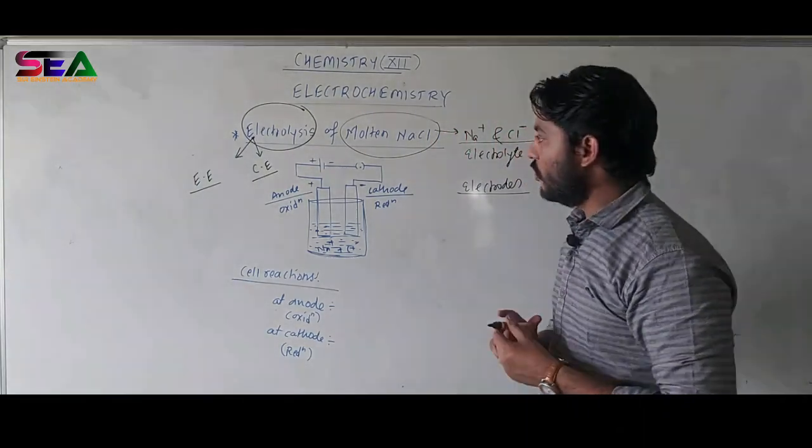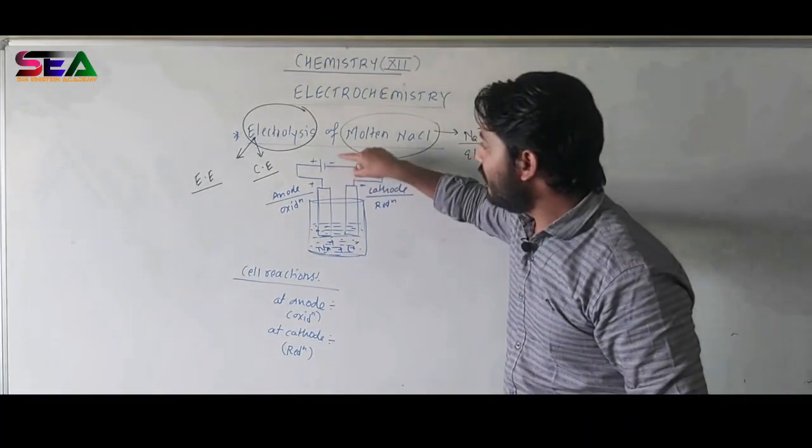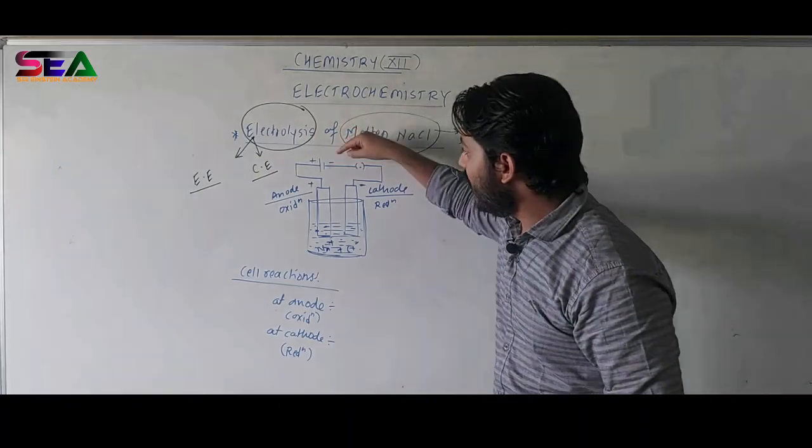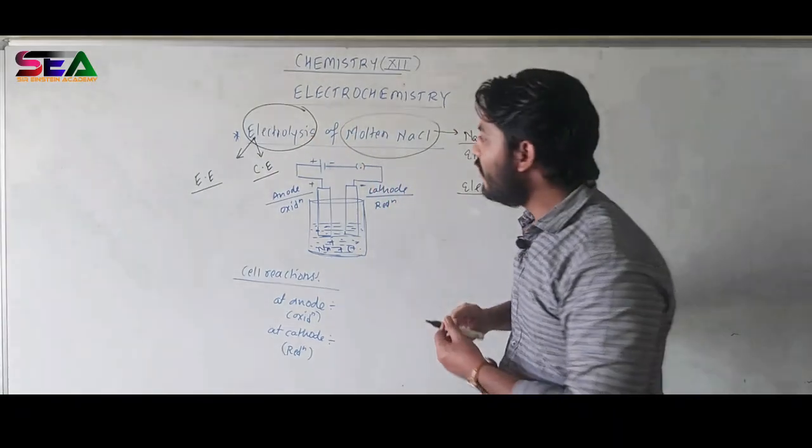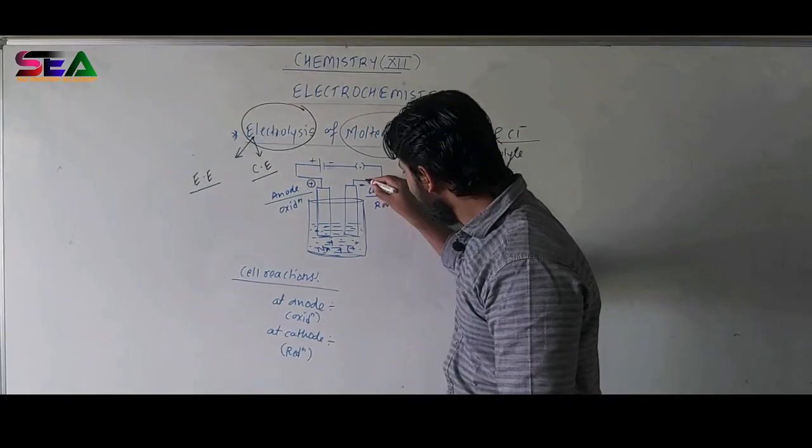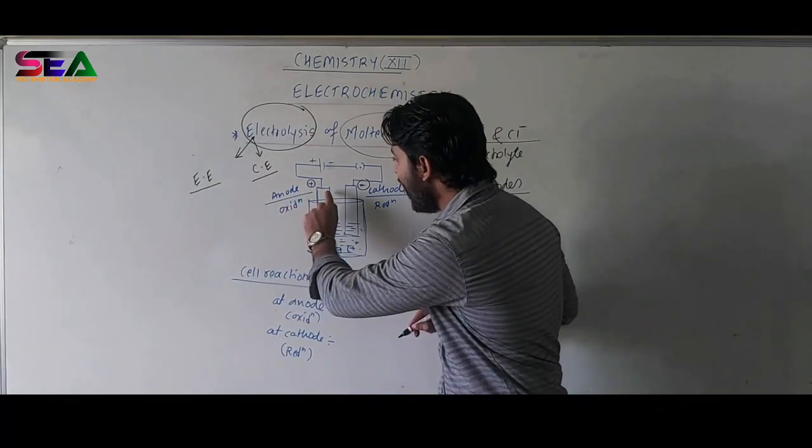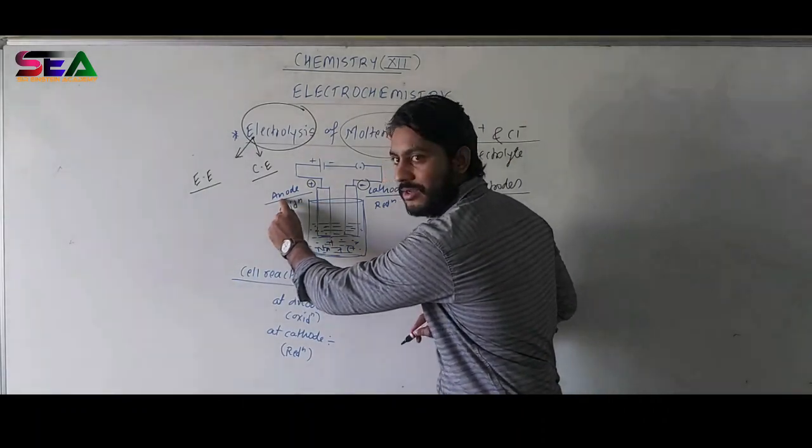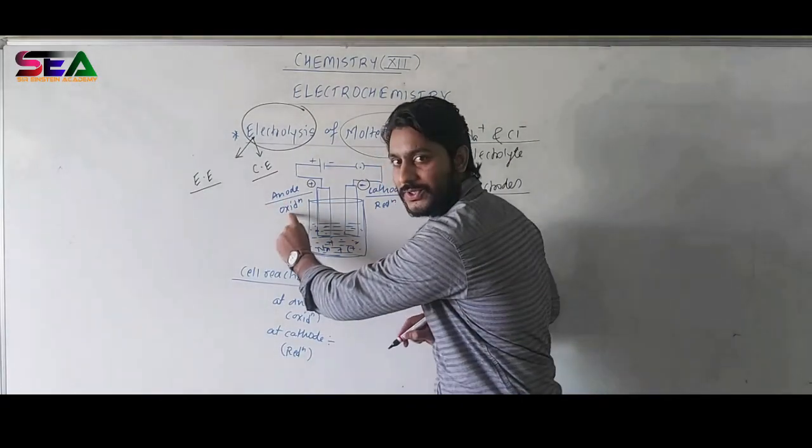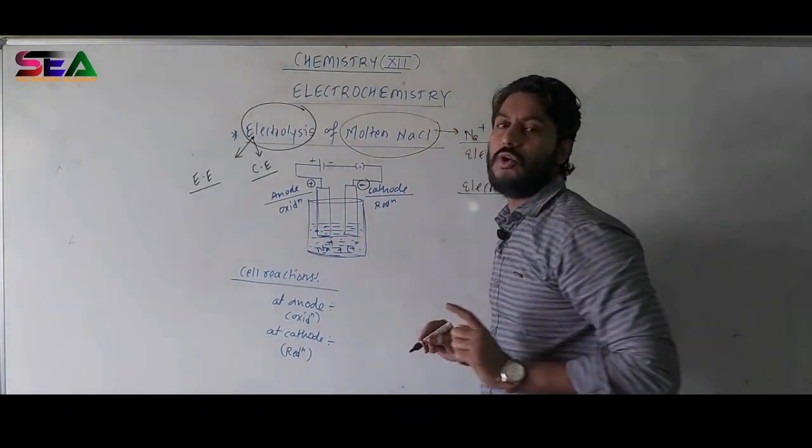Now, what we are supposed to do? When we will start this electric cell or when we will keep this circuit to the operating mode, we will find that this terminal is going to develop positive charge and this will develop negative charge. So, here we will name our electrode as anode, to which oxidation occurs and we will also name this electrode as a cathode, to which reduction occurs.